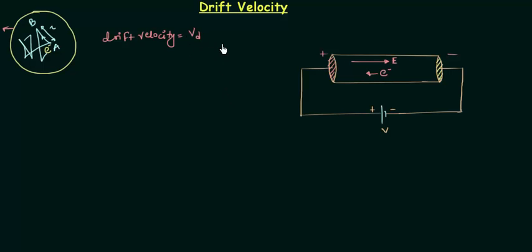It is the representation for it. Now let's move to another important thing which is given as I equals N a e Vd. This is something you cannot derive but you have to remember this thing. N is the number of electrons, e is the electron charge, A is the area, and Vd is the drift velocity.